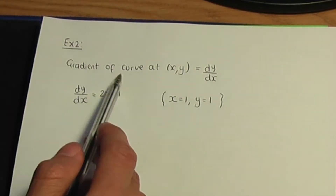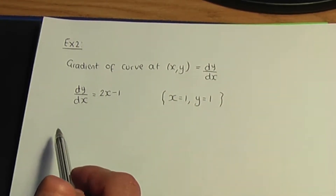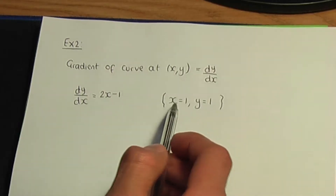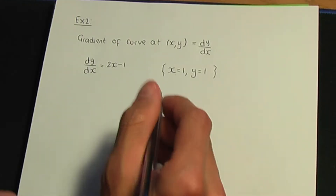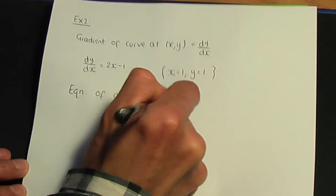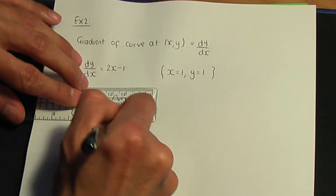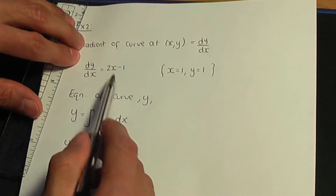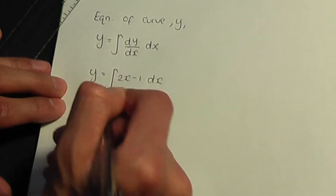The gradient of a curve at x, y means dy over dx, which is the general gradient of the curve at point x, y. We've been given dy over dx as 2x minus 1, and the point (1, 1) means x equals 1 and y equals 1. To find the equation of the curve, we need to calculate y by integrating dy over dx with respect to x. So let's replace dy over dx with 2x minus 1 and integrate.